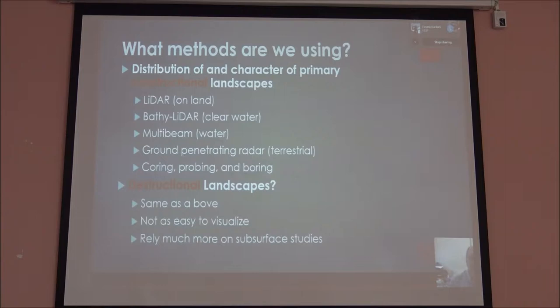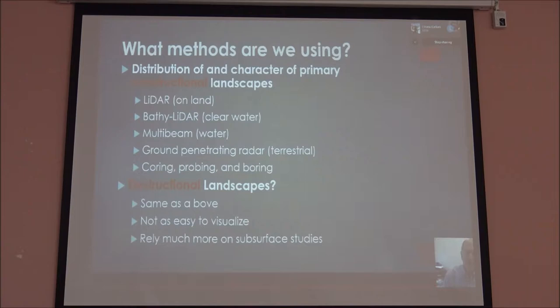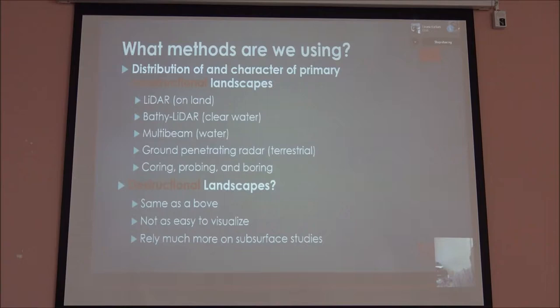Multi-beam right now is the best way to do it because we are not fortunate enough to have the beautiful clear waters that you do there — ours tend to look like mud. We also use coring and probing. These methods are used on constructional landscapes that have been built up through time, on destructional landscapes where rivers are cutting into them, or where the landscape is just weathering away. We rely much more on subsurface studies, trying to find old paleo valleys and reconstruct that paleo landscape so we can identify all the different features.